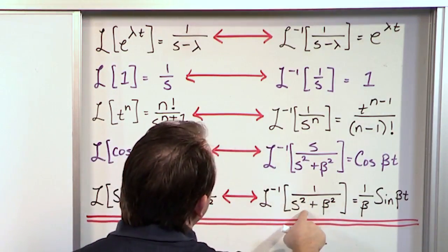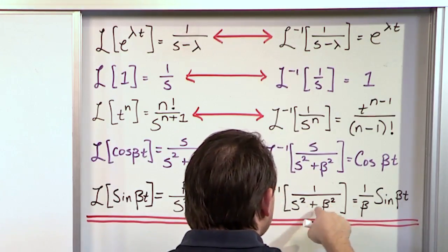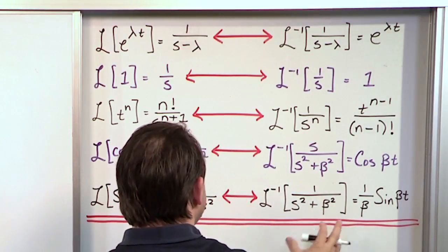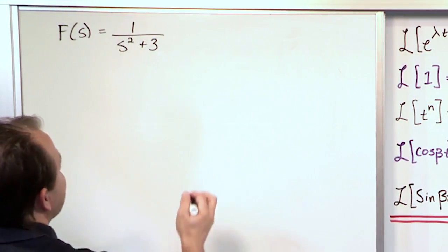This kind of does look like something we might be able to use, because we have 1 on the top and s squared plus 3. But it doesn't quite look like beta squared, so we're not sure if it works, but I think we're going to be able to use this. So let's just kind of write that down.